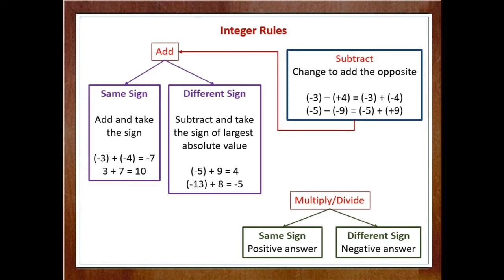In the case of subtraction, we simply change to add the opposite. In the case of multiplication or division, when both the integers have the same sign, the answer comes out to be positive. When both the integers have different signs, the answer comes out to be negative. Hopefully, it is clear to you.